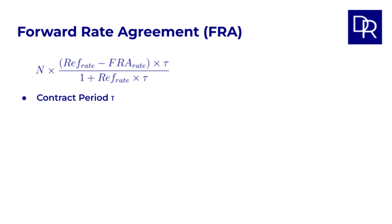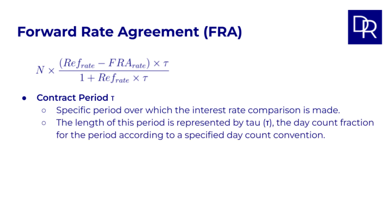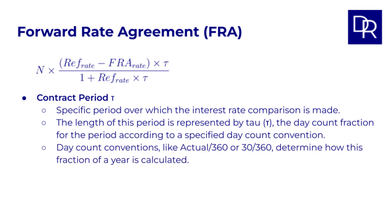Fourth, the contract period. This is the specific period in the future over which the interest rate comparison is made. The length of this period is crucial and is represented by tau, the day count fraction for the period according to a specified day count convention. Day count conventions like actual/360 or 30/360 determine how this fraction of a year is calculated. Understanding these conventions is important for precision in finance — I might cover them in a separate deep dive video.